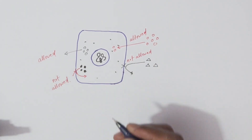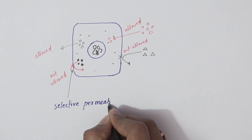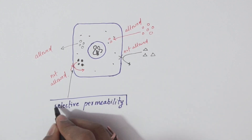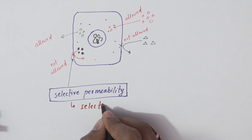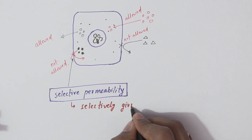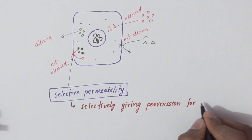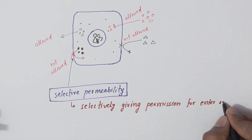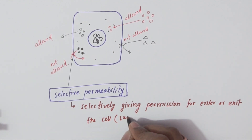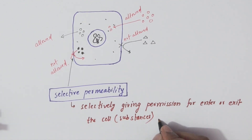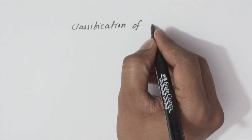This type of permeability is called selective permeability, where the cell membrane selectively allows certain substances to enter or exit the cell. Now we will discuss the classification of cells.